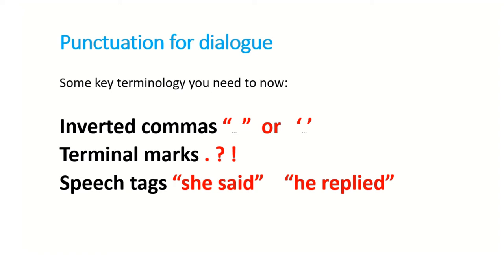Then you've got terminal marks. Think of a bus terminal — it ends there. Think of when something is terminated — it ends. So full stops, question marks, and exclamation marks are punctuation examples that terminate a sentence. Then you've got speech tags. They come before or, usually, after the dialogue — for example, 'she said' or 'he replied.' These are basic ones. Sometimes you don't need speech tags, but we'll start with the basics today and assume that you do.